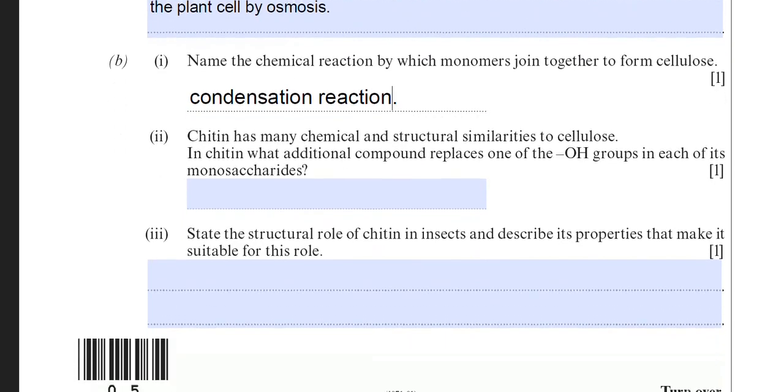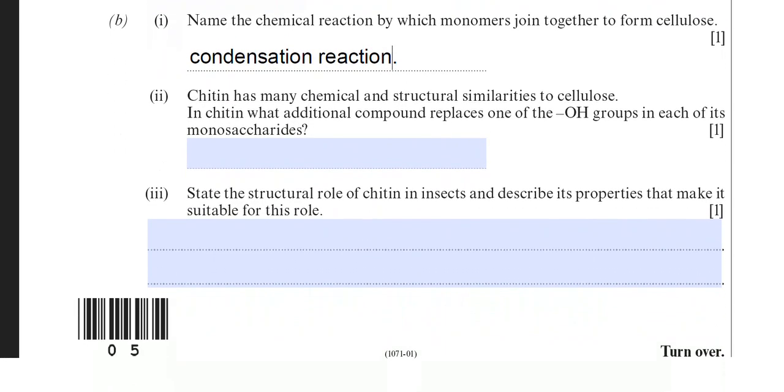The other acceptable answer here that's in the mark scheme, although I would prefer condensation reaction, is they would allow polymerization. Polymerization is just when you join loads of monomers together to form a polymer. It's another way of saying condensation reaction. But I think the best advice is to stick with condensation reaction. Part B2 then.